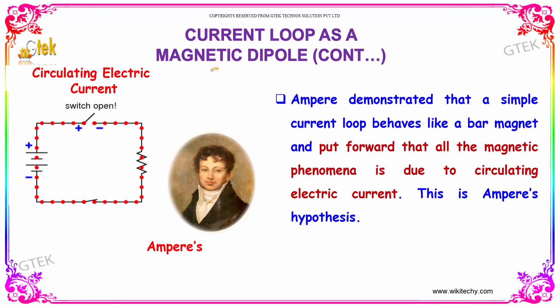Ampere demonstrated that a simple current loop behaves like a bar magnet and put forward that all the magnetic phenomena is due to circulating electrical current. This is called Ampere's hypothesis.